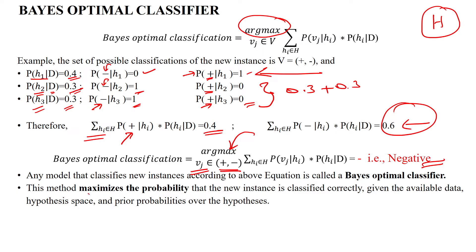This method maximizes the probability that the new test data is classified correctly as negative, given the available data, hypothesis space, and prior probabilities over the given hypotheses. Thanks for watching.